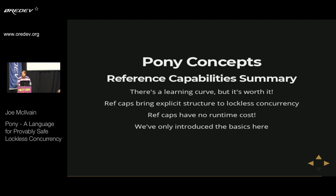We've talked a lot about the motivation for reference capabilities and the basics of how they work, but we've only scratched the surface. There's a lot more when it comes to how reference capabilities are modified as you view them through an object's fields, and it gets more complex with generic types and type parameters. My goal with this talk was to give you an introduction to the paradigm Pony brings to the table, a solid understanding of the basics, and a motivation for it. Hopefully this will pique your curiosity to go learn more with our tutorial and online content. If you take the time to really wrap your head around reference capabilities, it changes the way you think about concurrent data safety in every other programming language you work with.